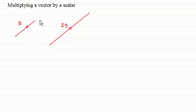And we call this multiplying a vector by a scalar. The scalar in this case is the number 2. If I multiplied it by 3, it would be 3.